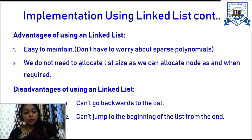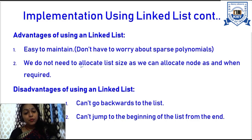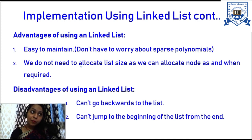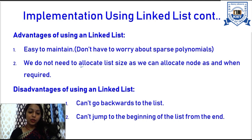The nodes are generally arranged in decreasing order of exponent value, as we write polynomial equations in decreasing order of exponent. The advantages of using linked list implementation are: it is easy to maintain, we do not need to worry about sparse polynomials, and we do not need to allocate the list size in advance since nodes are allocated dynamically through dynamic memory allocation. The only disadvantage of using a singly linked list is that we cannot go backward to check higher exponent values, and we cannot jump from the end of the list to the beginning.